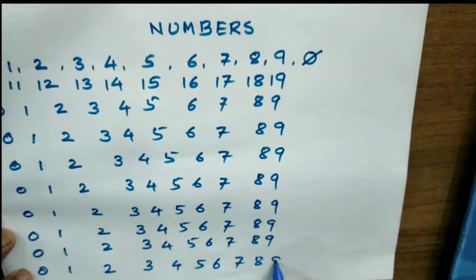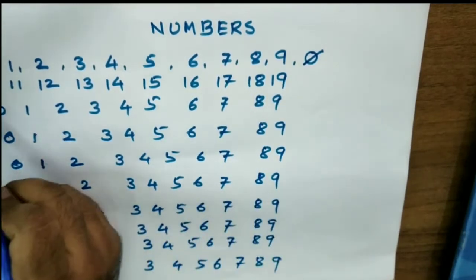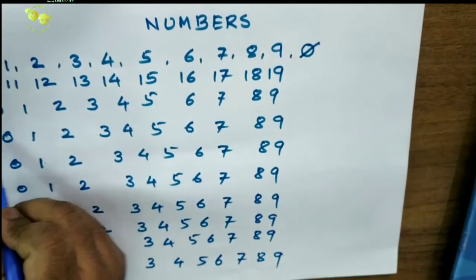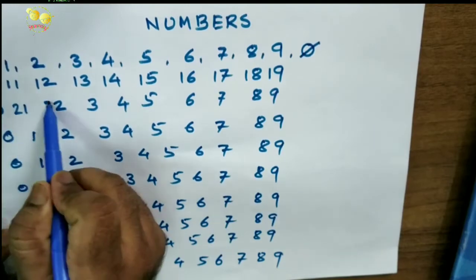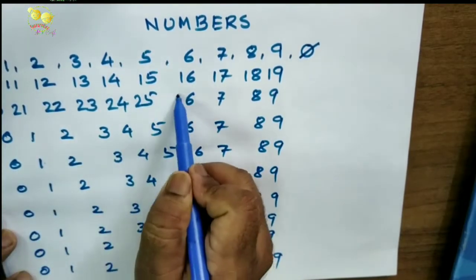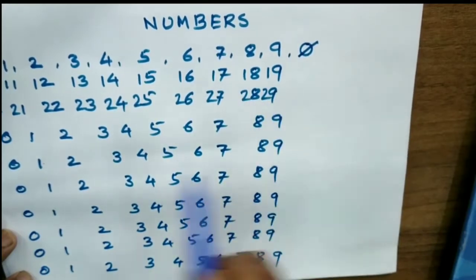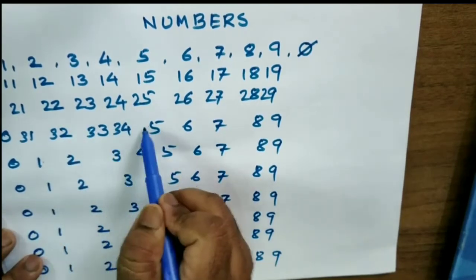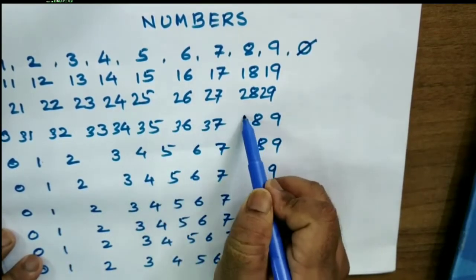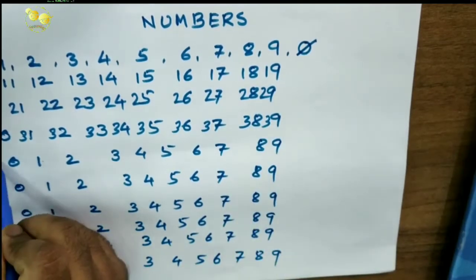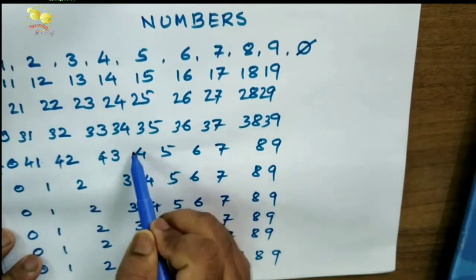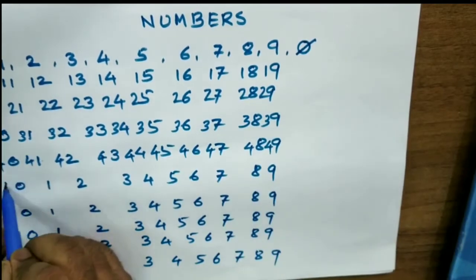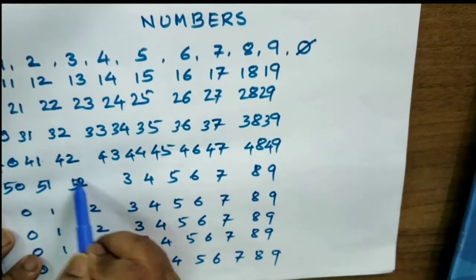Okay so 1 through 90. If we use two tens, these are the tens. Twenty, twenty-one, twenty-two, twenty-three, twenty-four, twenty-five, twenty-six, twenty-seven, twenty-eight, twenty-nine. Thirty, thirty-one, thirty-two, thirty-three, thirty-four, forty, forty-two, forty-three, forty-four, forty-five, forty-six, forty-seven, forty-eight, forty-nine. Fifty, fifty-one, fifty-two, fifty-three.